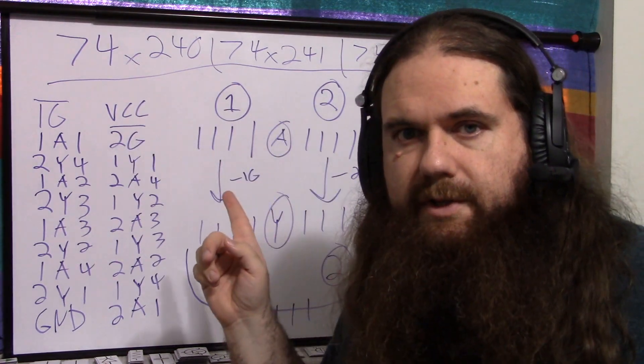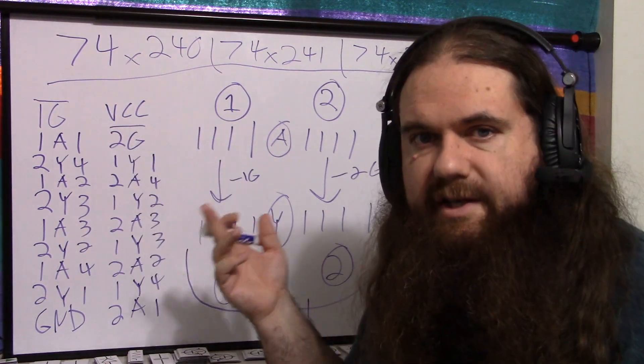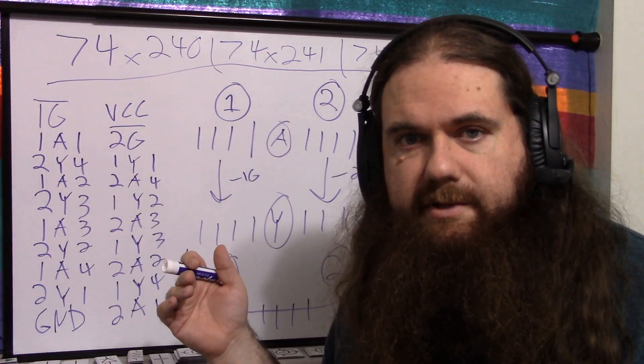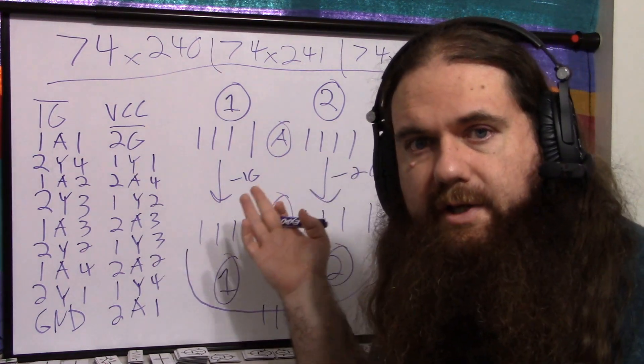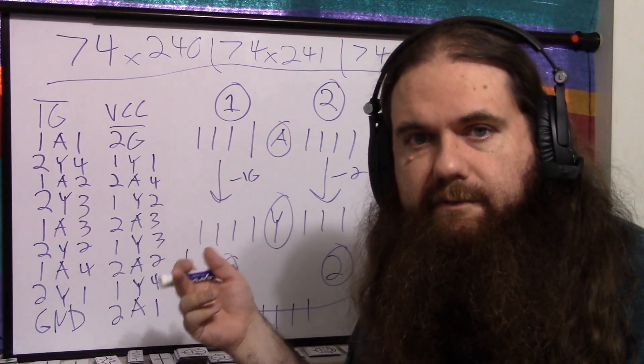So the difference between the three chips is just inverting and not inverting. So the 240 is inverted outputs. The output signals, it's just as if they've passed through an inverter. The 244 is non-inverted. That's the only difference between the two. And 1G and 2G on both of them are active low.